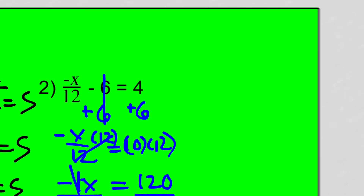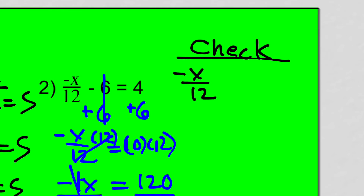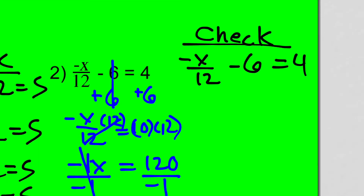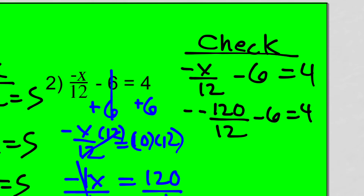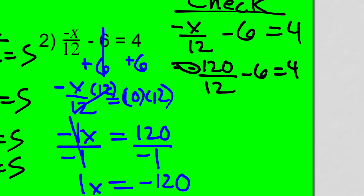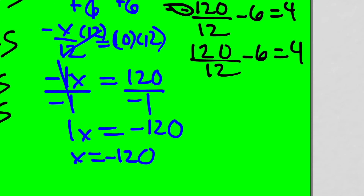The check: start with the original equation, negative 1X over 12 minus 6 equals 4. Substitute in negative 120. Negative times negative is positive, so positive 120 divided by 12 minus 6 equals 4. 120 divided by 12 is 10, minus 6 equals 4. That is true: 4 equals 4. We are done.